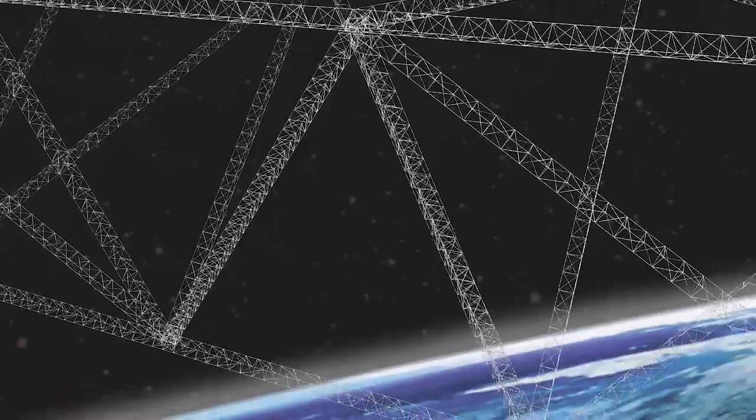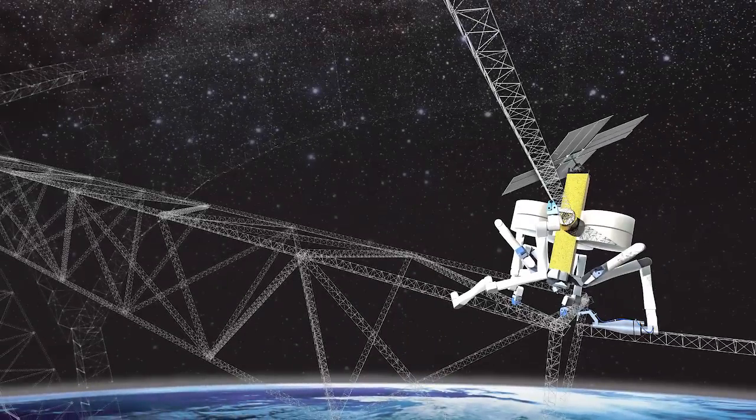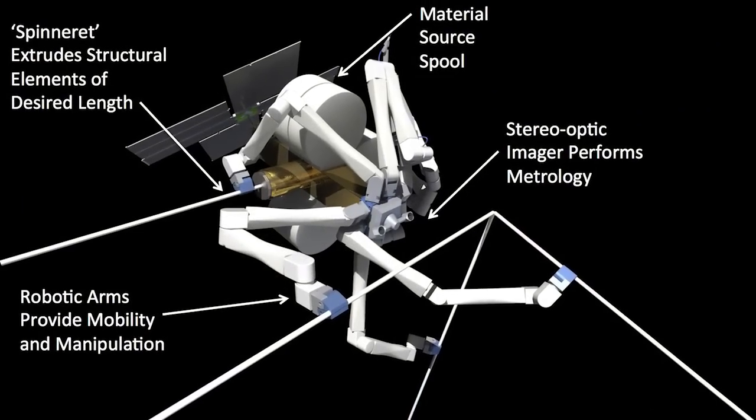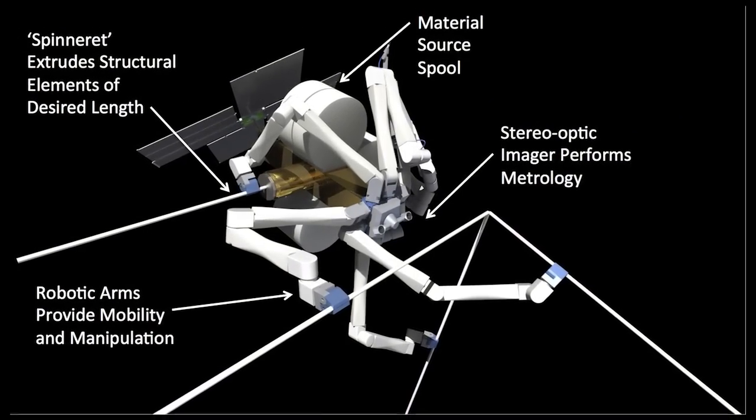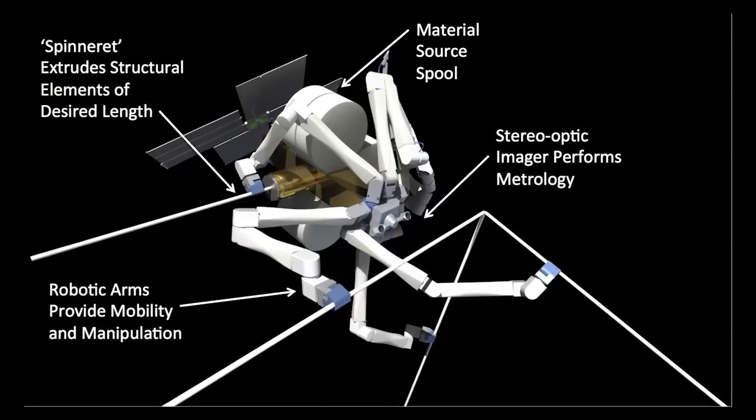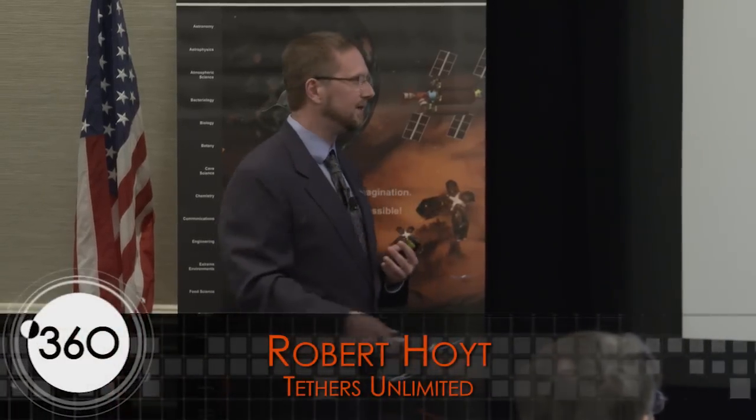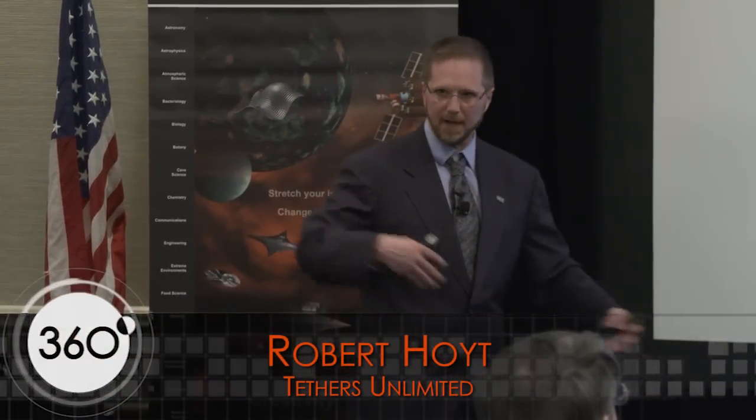And when we looked at the requirements, this system ended up having the morphology of a spider. So it's got multiple robotic arms, it needs tools, which I'm calling spinnerets because it's a spider, for fabricating structural elements and additional tools for bonding them together to build up a big structure.